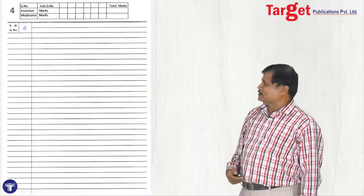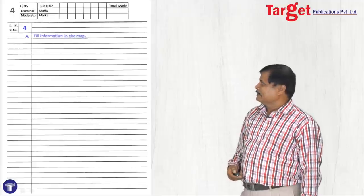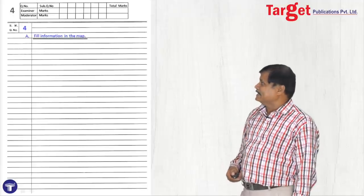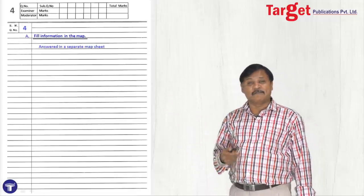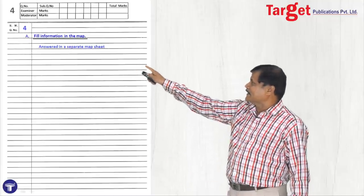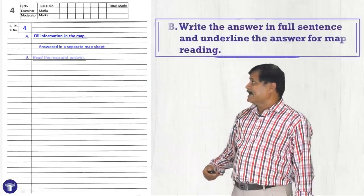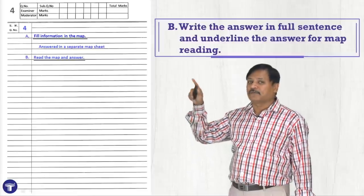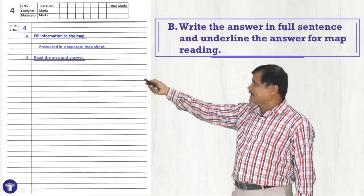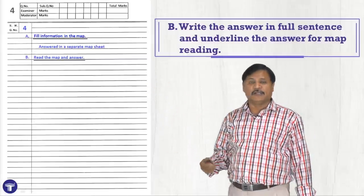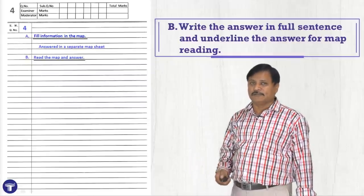Now you are on question four. Immediately write the main question number in the box. There are parts A and B. A is 'fill information in the map' — map marking. So here I did not write the map question; I have written 'answered in a separate map sheet.' Do not write the map questions here. Then B — as it is a subunit of question 4, I have started B on the same page. I have given the title 'read the map and answer' or 'map reading'. Give the title. Without title, do not attempt — you are in a safe place.